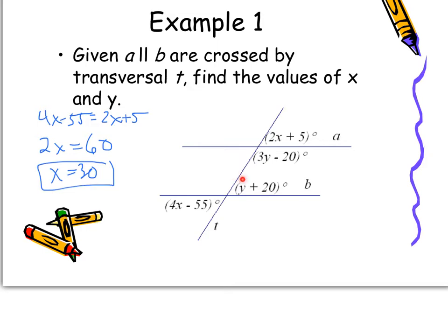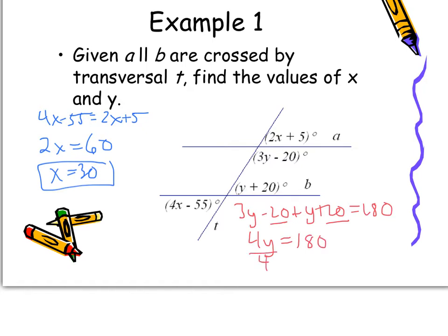Now we need to find Y. The angles labeled in terms of Y are same side interior angles, so they're supplementary. That gives us (3Y − 20) + (Y + 20) = 180. Combining like terms: 4Y = 180, so Y = 45. We now have both answers: X = 30 and Y = 45.